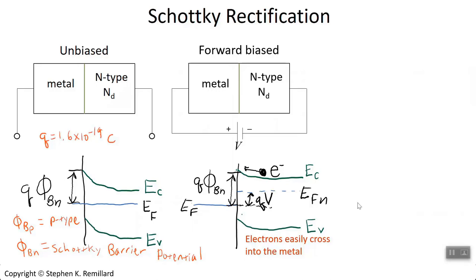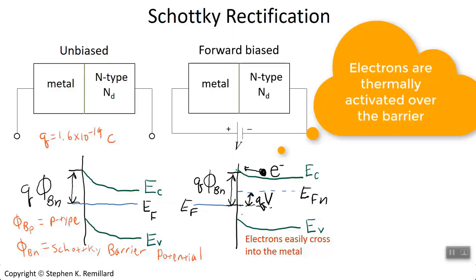The electrons still don't have enough energy to get over the barrier. For electrons to flow effortlessly into the metal, the applied voltage would need to raise the conduction band edge all the way up to φ_bn. Otherwise there is still a hill to climb, and the battery voltage alone doesn't get the electrons over it. They still need thermal energy to completely get over the hill, so it is by thermal activation that electrons are able to cross the barrier.